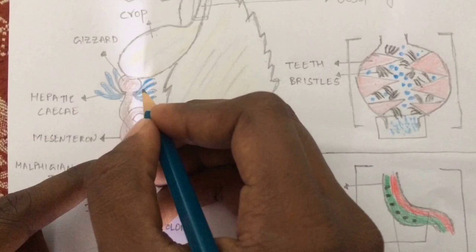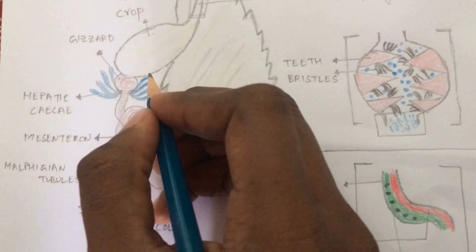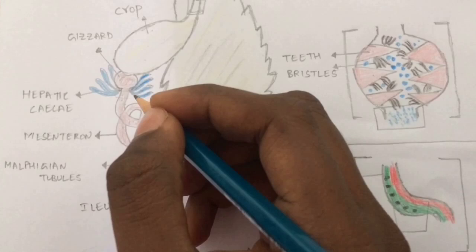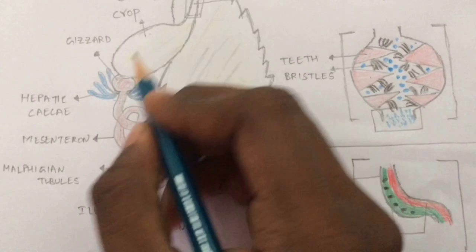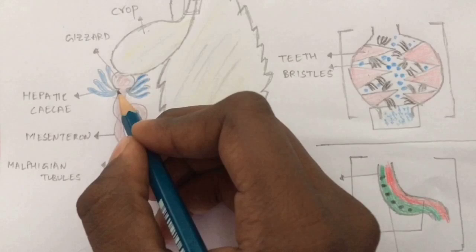The function of the hepatic caeca is absorption of food material. Coming to the human digestive system, it mainly consists of finger-like projections known as microvilli, whose function is to absorb nutrients present in the food material. In the same way, in the cockroach, the function of the hepatic caeca is absorption of food material.